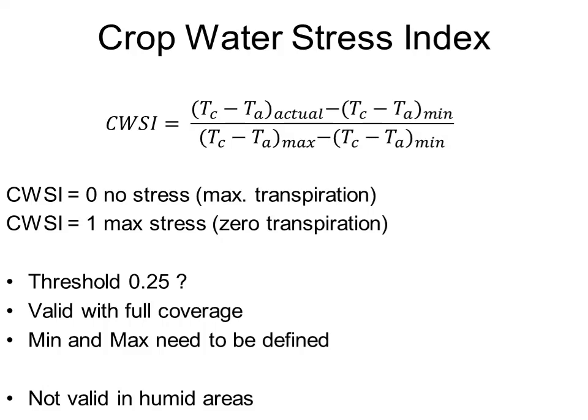When there is no water stress, the CWSI will be zero, while when stress is maximum — that is, zero transpiration — the CWSI will be equal to one. Some people have proposed a general threshold of 0.25, but that is not clear for all species. In principle this idea can be applied only to crops under full cover, and the more complicated part is not measuring the temperature but defining the minimum and maximum values of the canopy-to-air temperature difference. The CWSI is useless in humid areas because crops do not heat up much when the air is very humid.